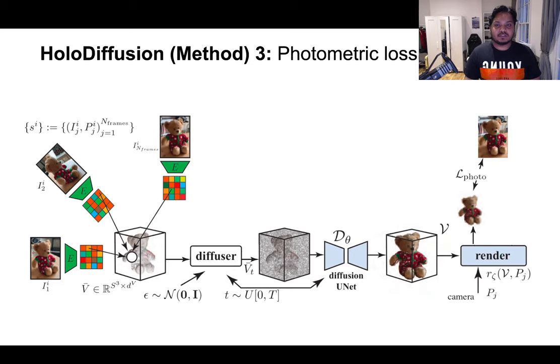Since the ground-truth 3D voxel grids are not available, we instead optimize a photometric error between the rendered images of the predicted feature voxel grid V and the ground-truth images from the dataset for certain target views which are different from the source views.